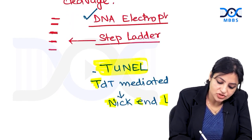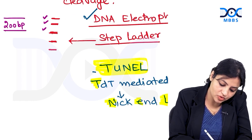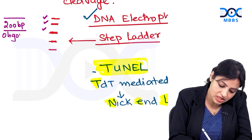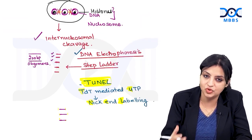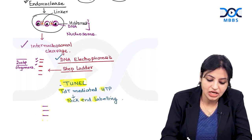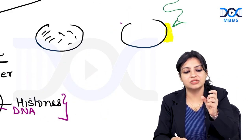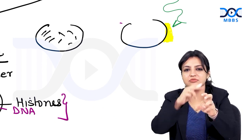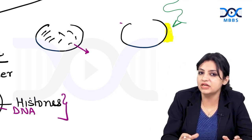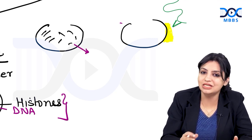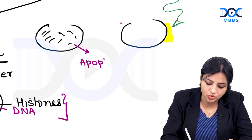If someone asks you the size of these cut pieces, they are all 200 base pair size oligomers — that is what you have to remember. These are fixed-size cut pieces. Once these pieces are formed, the cell packs all the broken-up DNA into a small sac, a small body. All the cut pieces of the cell are put together and this body is called the apoptotic body.